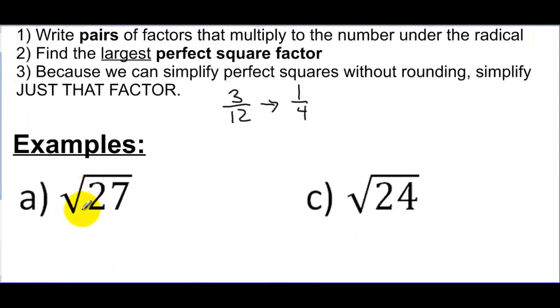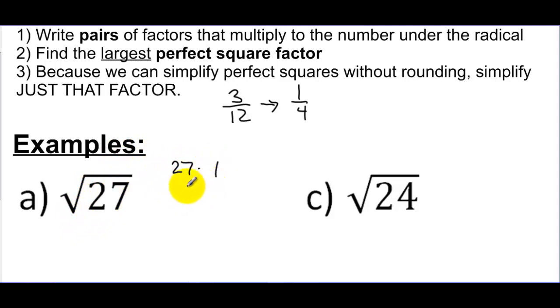I'm going to look at 27 and say: if I look at the factors of 27, it's 27 times 1 — and 1 is on the list — and it's also 9 times 3, and 9 is on the list.